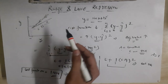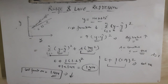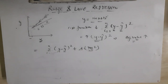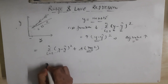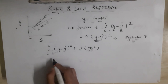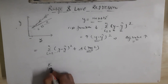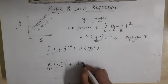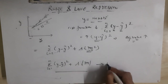Lasso and ridge regression work in the same way — they are very similar. The only difference between lasso and ridge is that instead of taking the square of the slope, in lasso regression we take the absolute value of the slope. So the lasso cost function is: summation of (y minus y-hat) squared plus lambda times the absolute value of m. That is lasso regression, whereas ridge uses lambda times m squared.